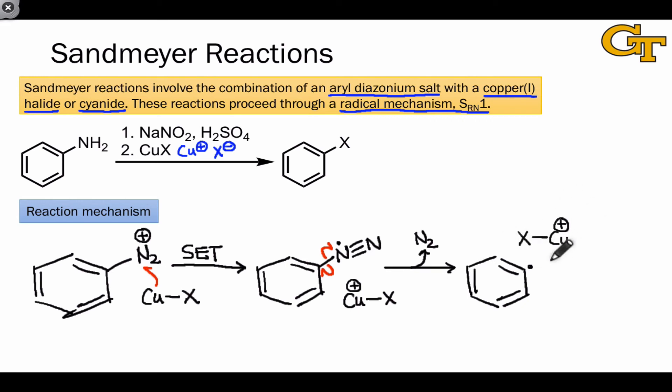At this point, the copper(II) halide species that we generated after single electron transfer couples to the phenyl radical, forming the new carbon-X bond. This step generates the substituted aromatic product, and also releases copper-plus, or copper(I) ion.